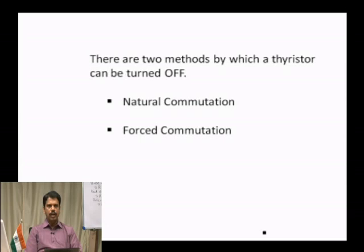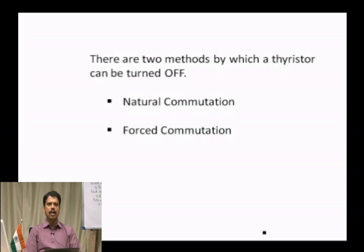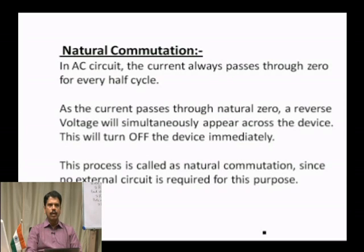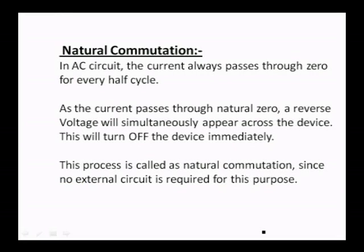There are two broad classifications of commutation: natural commutation and forced commutation. Whenever the source voltage is AC, the thyristor is naturally commutated. Whenever the supply voltage is DC, forced commutation is required. In an AC circuit, the current always passes through zero every half cycle. As the current passes through natural zero, a reverse voltage simultaneously appears across the device, turning it off. This process is called natural commutation, since no external circuit is required.